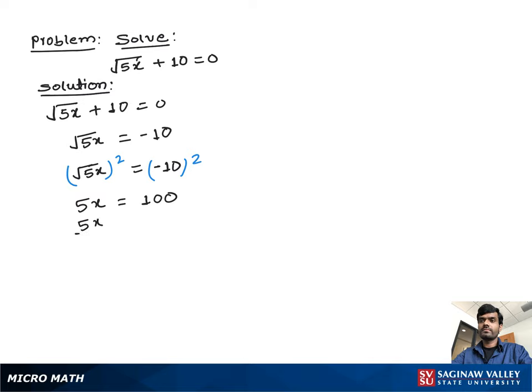So we can write 5x over 5 equals 100 over 5. Now 5 and 5 cancel out. So we get x equals 100 divided by 5, which is 20. So our x value is 20.